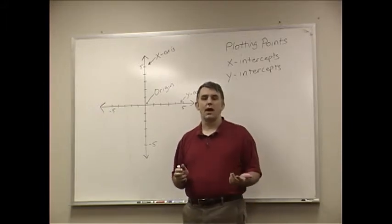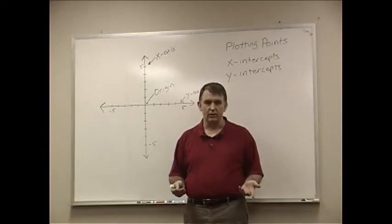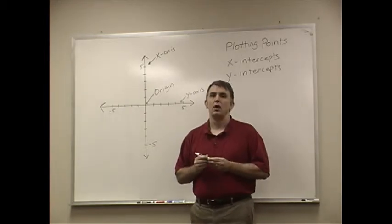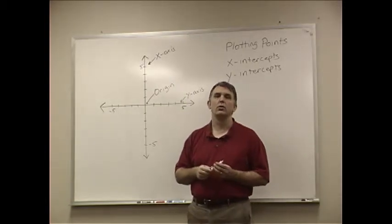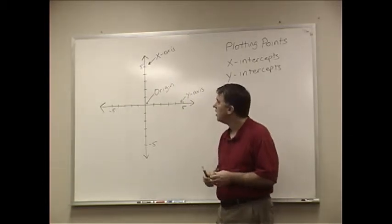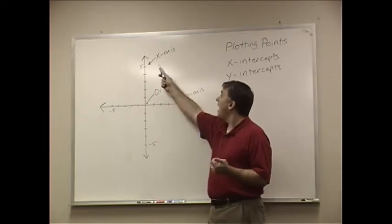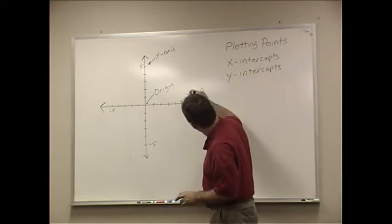We're going to be starting now with equations that have two variables, an x and a y. Now, when you go to graph, you are now on what is officially called the rectangular coordinate grid. And the rectangular coordinate grid has got an x-axis and a y-axis.